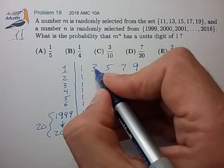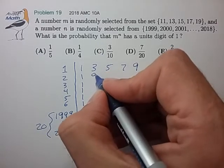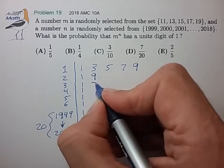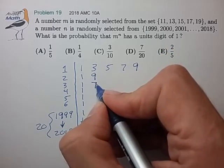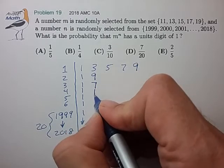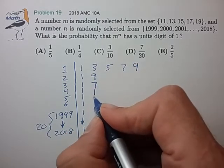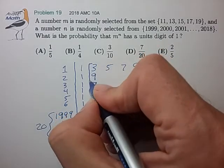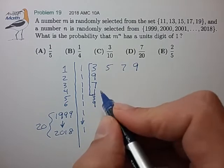For the units digit of 3, 3 squared is 9. 9 times 3 is 27. 27 times 3 gives us a unit digit of 1. Times 3 gives us a unit digit of 3. So this starts repeating with a period of 4. So that's helpful.